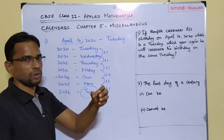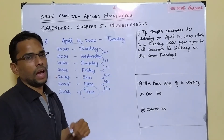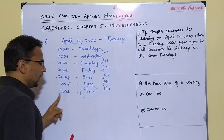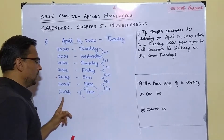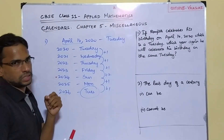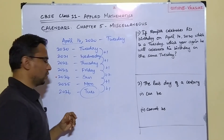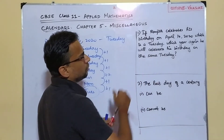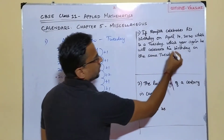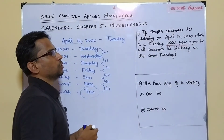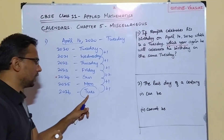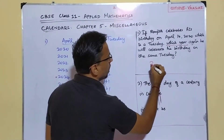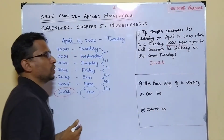In 2020, Ranjit's April 14 birthday fell on a Tuesday. After 2020, looking year by year, we again get a Tuesday only in the year 2026. So the answer for this question is 2026.